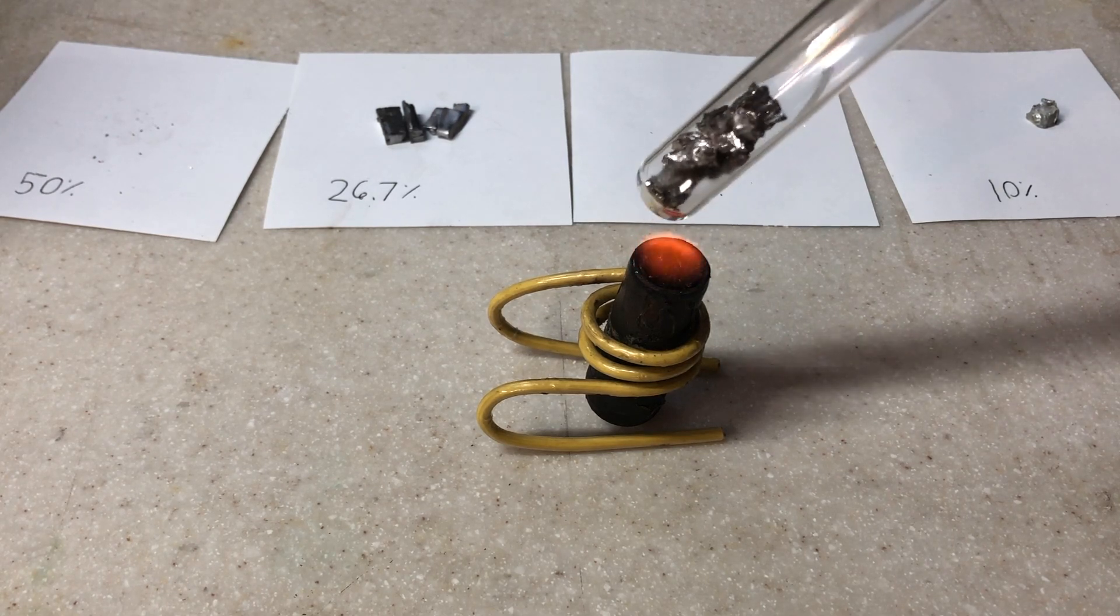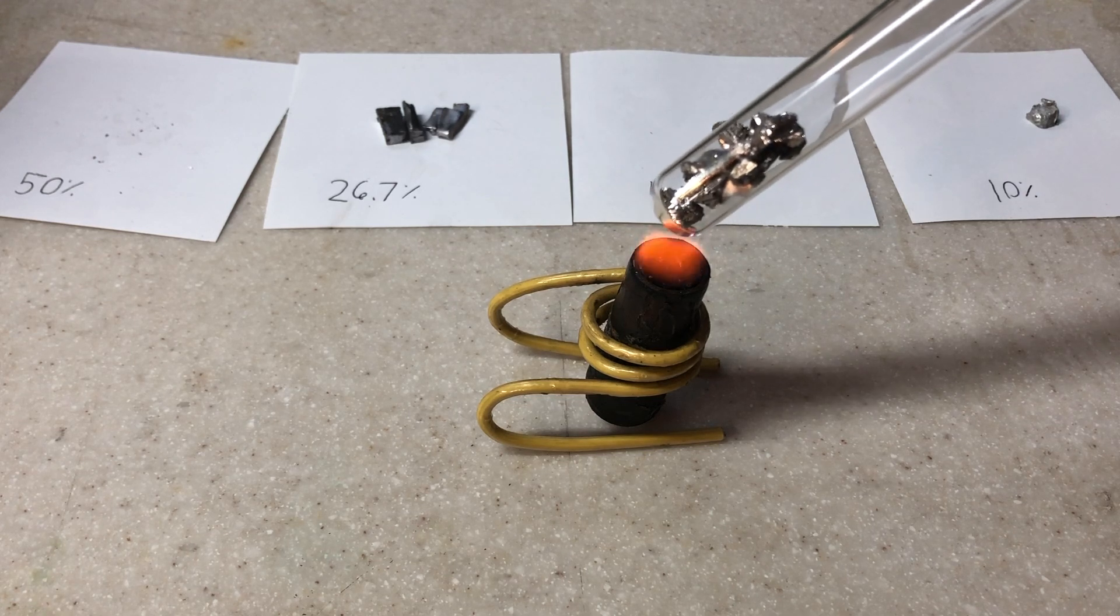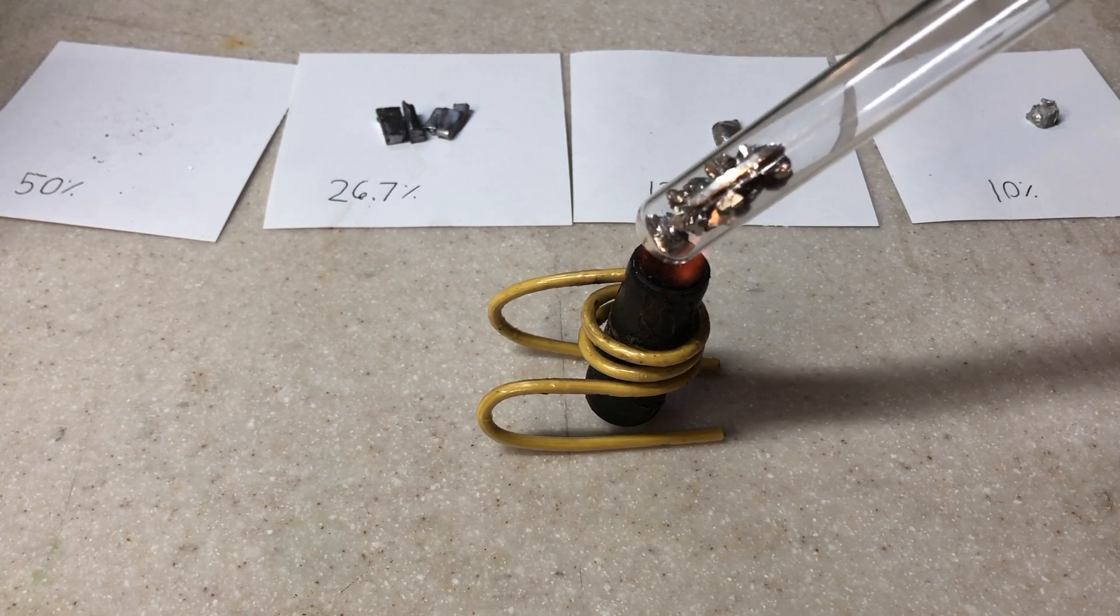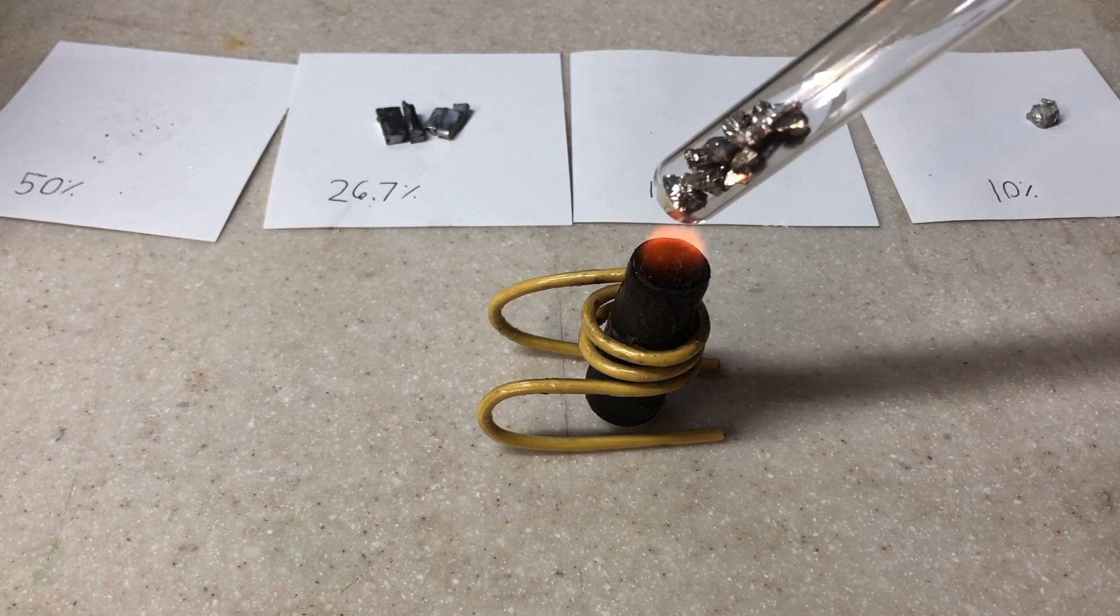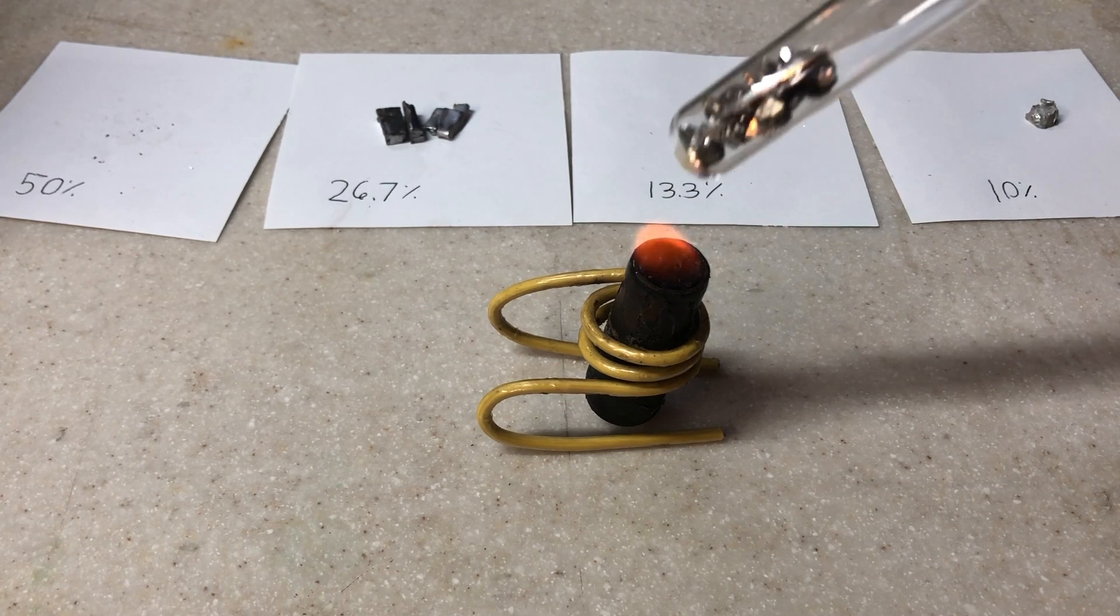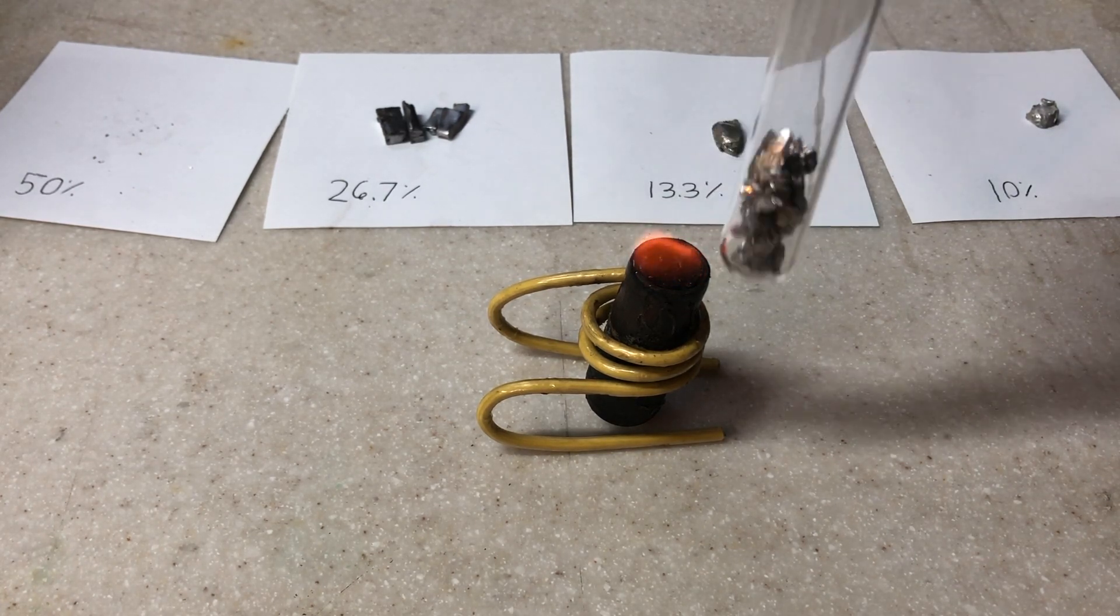I'm starting with 50% bismuth. I'm using an alcohol flame because I don't want the temperature to get too hot. If it's too hot, I'll get cadmium off-gas, which as discussed before, is dangerous.